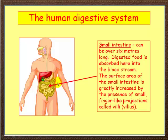The small intestine can be over six metres long. Digested food is absorbed in the small intestine into the bloodstream. To help it do that, the surface of the small intestine has lots and lots of very small finger-like projections called villi.